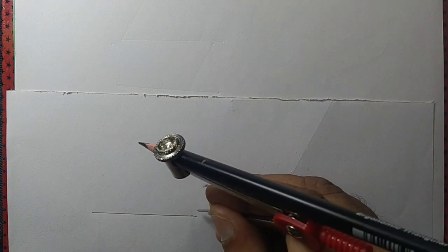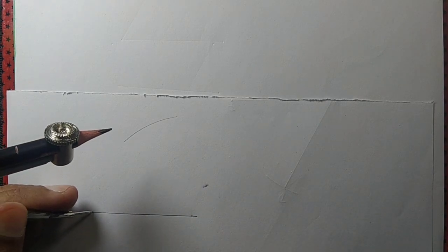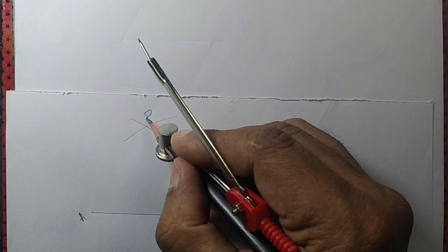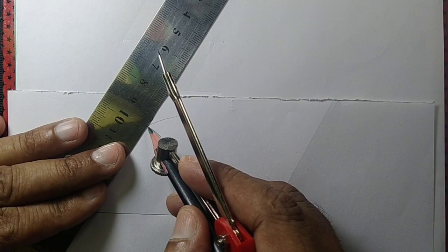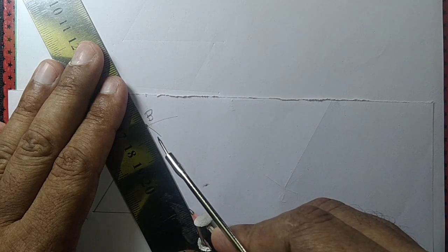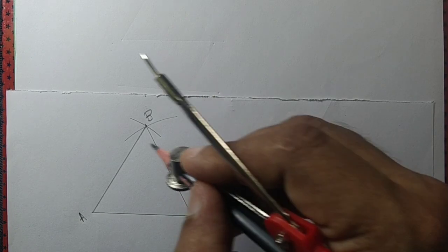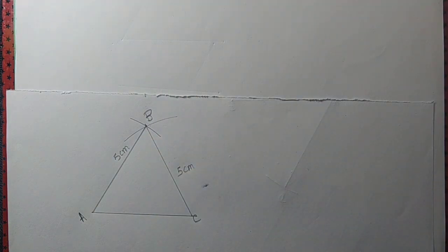Now let us draw an arc with radius equal to 5 centimeters from one end of the line segment, and another arc with radius also equal to 5 centimeters from the other end. Let one end of the line segment be A, let the two arcs intersect at point B, and let the other end be C. We join AB and BC to get an equilateral triangle, where each side equals 5 centimeters.